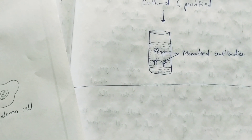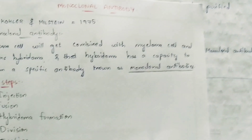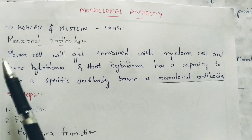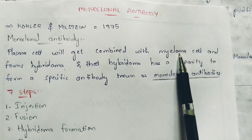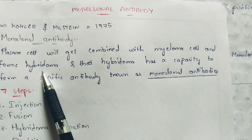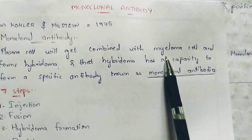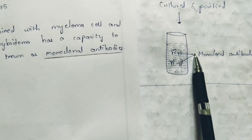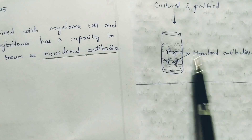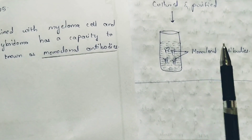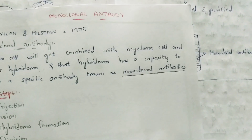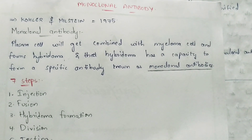You have to understand here because there is no digital explanation, so you have to understand by yourself. This is the explanation of monoclonal antibodies — how the formation takes place. Now if you see the definition, you can understand properly: plasma cell will get combined with myeloma cells, and that forms hybridoma — this hybrid individual. That hybridoma has a capacity to form specific antibodies known as monoclonal antibodies. From the hybridoma cells only, these monoclonal antibodies are produced.